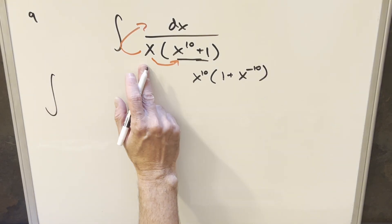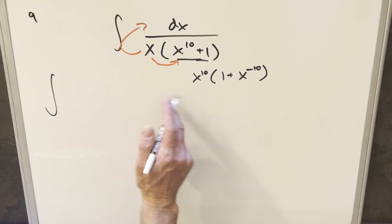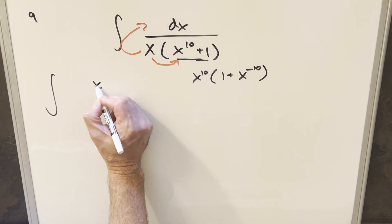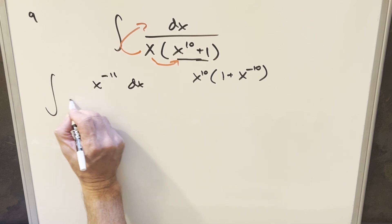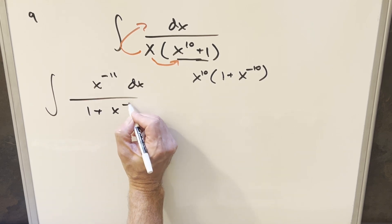And so when we do this, x times x to the 10th is x to the 11th. I'll bring those together into the numerator. So we'll have this as x to the minus 11 in the numerator. We'll just have this 1 plus x to the minus 10.